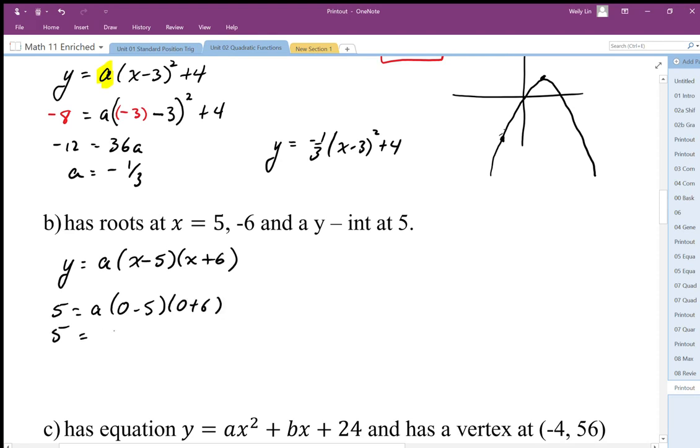We plug in the y-intercept of 5 when x is 0, then solve for a. So we end up with -30a = 5, so a equals -1/6.